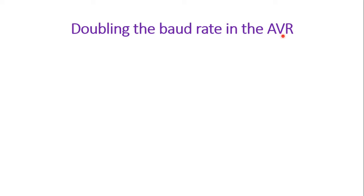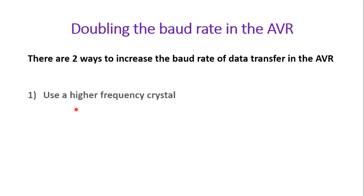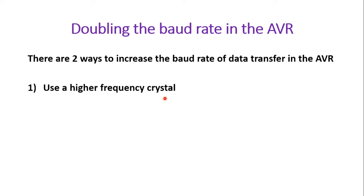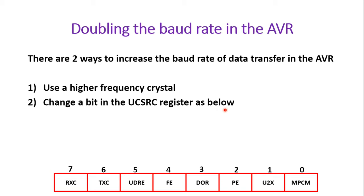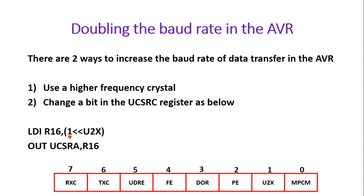The next topic is how to double the baud rate in AVR. Suppose you want to go from 4800 to 9600 baud rate. There are two ways to double it: first, use a higher frequency crystal — if using 8 MHz, go to 16 MHz. Second, change the U2X bit in the UCSRA register. To set this bit, write: LDI R16, (1 << U2X), which places bit position 1, giving 0b00000010, and copy that into UCSRA.